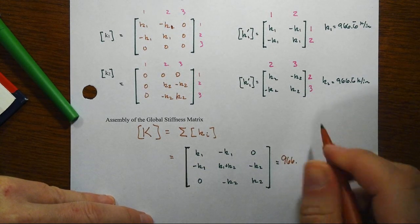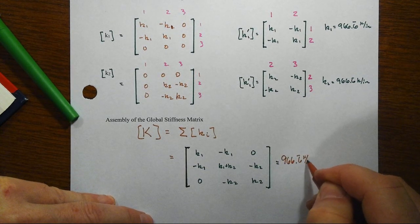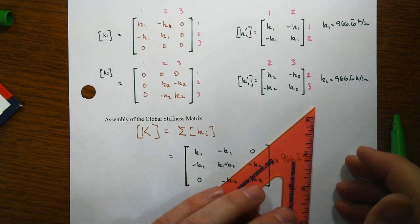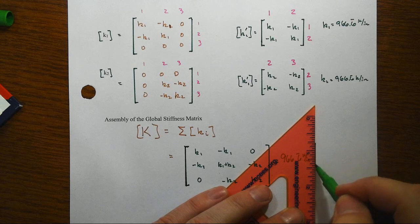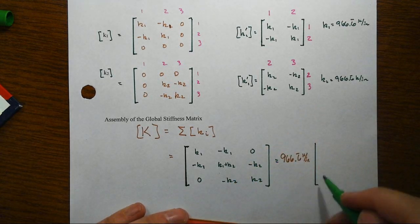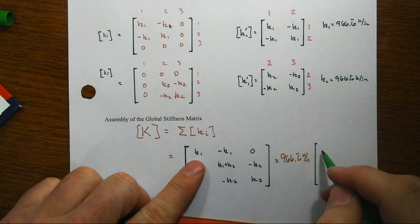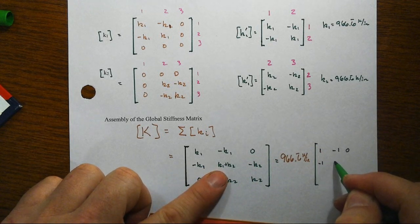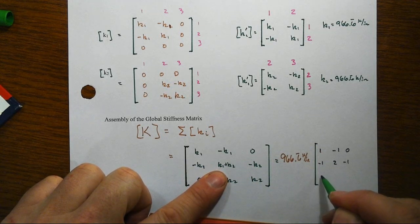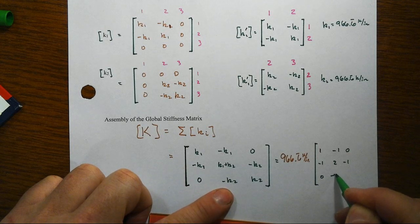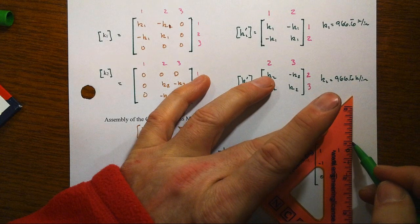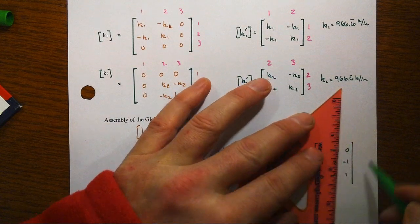We get 966.6 repeating kips per inch. And then we would get, then, as a matrix, looks like we don't have enough space in the paper, but actually we do. Because we're just going to get a 1, -1, 0, -1, 2, -1, and then 0, -1, and 1 again would be our global stiffness matrix.